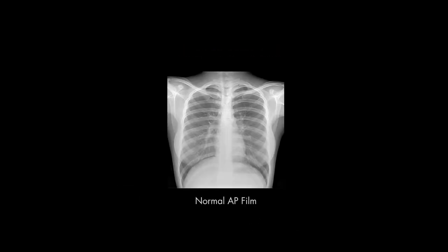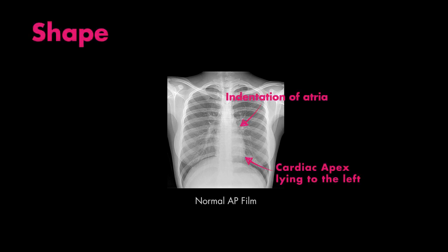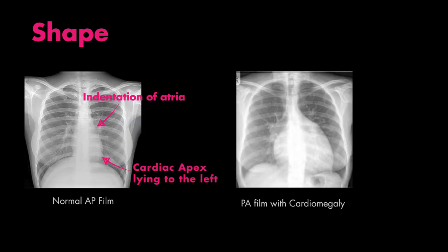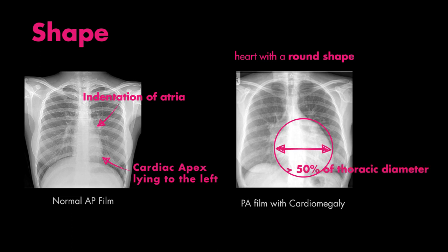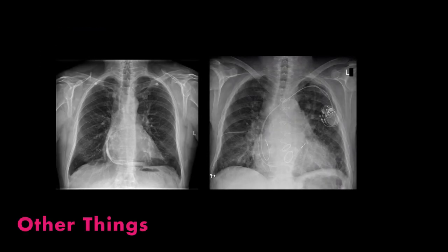Other considerations when assessing the cardiac silhouette include looking at the heart shape, which would look like this. In cases of very severe cardiomegaly, the heart may seem more round, like you see here. Other things you may notice include calcifications and prosthetic valves.